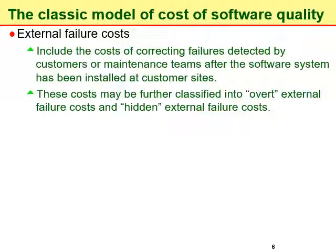External failure costs are the costs incurred on correcting failures detected by customers or maintenance teams after the software system has been installed at the customer site. These costs may be further classified into overt (obvious) external failure costs and hidden external failure costs. Typical overt external failure costs include, for example, costs of resolution of customer complaints during the warranty period and costs of correction of software bugs detected during regular operations.